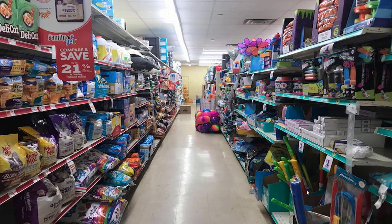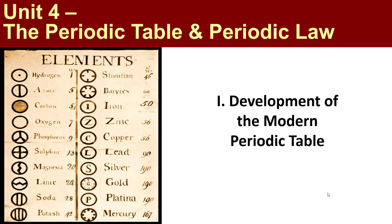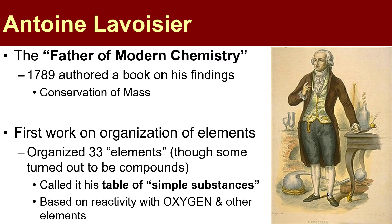Let's talk about how we went from completely disorganized information about elements to the elegant table we saw at the beginning of this video. Let's put that time machine in reverse and go way back to before the modern periodic table, beginning with Antoine Lavoisier. You may remember his name from one of the very first units we did where we talked about the law of conservation of mass. In terms of periodic table history, Lavoisier in 1789 authored a book based on many of his experiments and findings, which he appropriately called Chemistry.